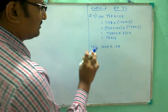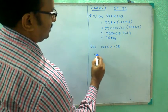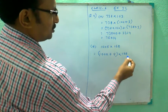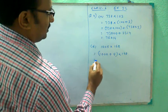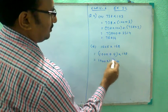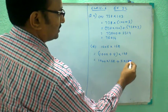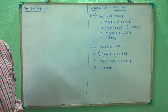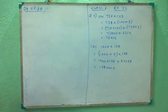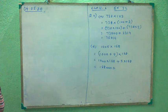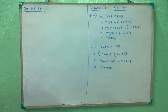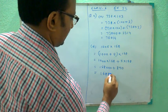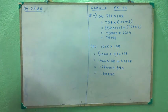Similarly part D, 1005 x 168. We can break 1005 as 1000 plus 5 into 168. This 168 will get multiplied by both numbers: 1000 into 168 plus 5 into 168. So 1000 into 168 is 168000, and 5 into 168 is 840. After adding we get 168840. This is our answer.